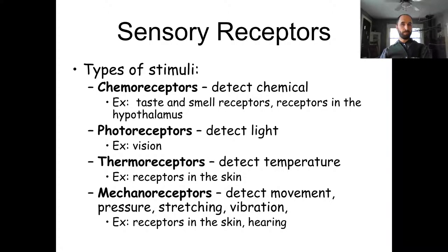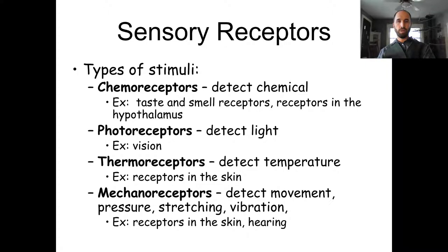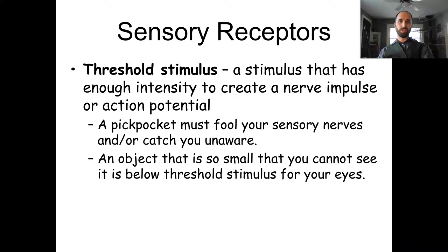Thermoreceptors detect temperature — pretty much everywhere we can detect temperature. Mechanoreceptors are our most common type and allow us to detect touch and vibration. We also use them for hearing: we have to change sound into vibration, and then we detect the vibration.